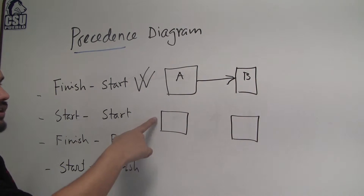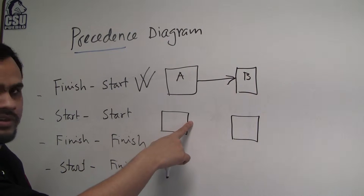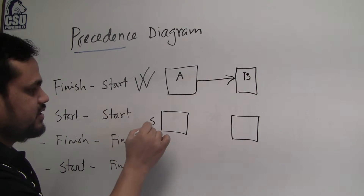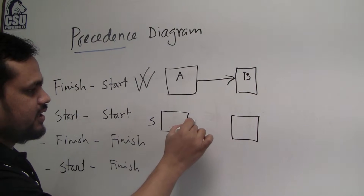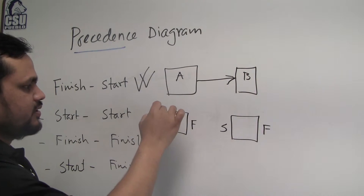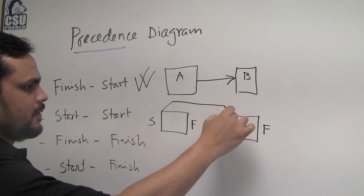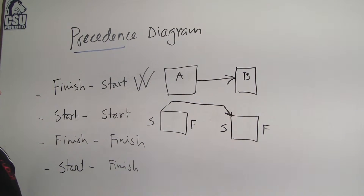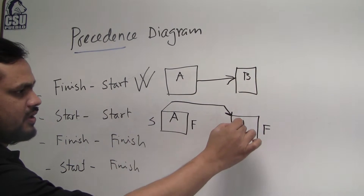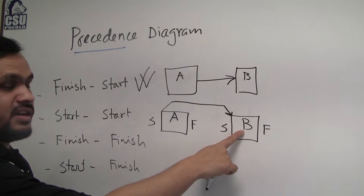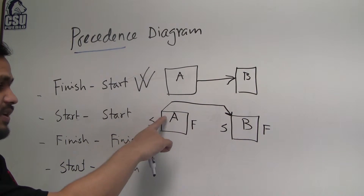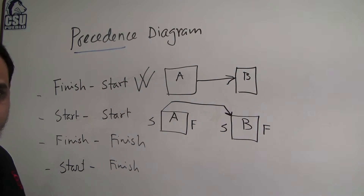Then there is start-to-start. This side is the start side, this side is the finish side. For start-to-start, activity A and activity B — B can start once A has started. If A does not start, B cannot start.